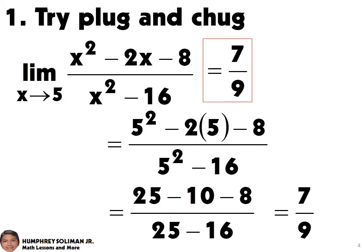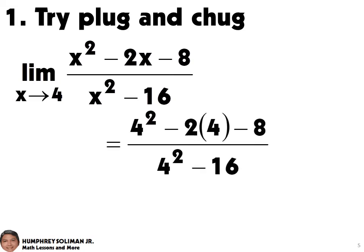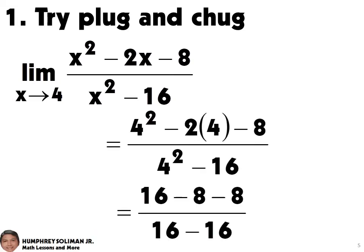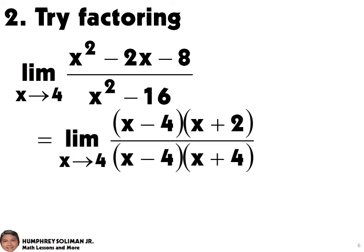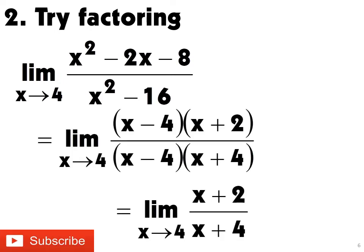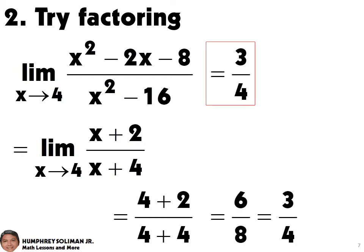Let's try another example. To solve for the limit of the function, we will try plug and chug first. We will substitute the 4 into the function and simplify. The result is 0 over 0. Now, if we factor the numerator and denominator, we will be able to cancel out the common factors. And then, if we do plug and chug again, we will get 3 over 4 — this is already the answer.